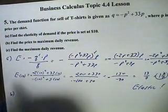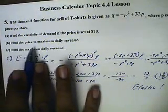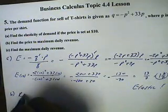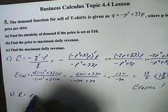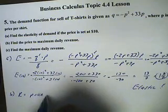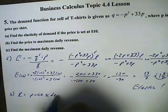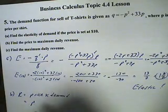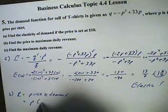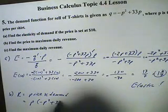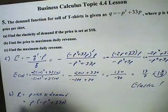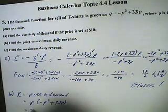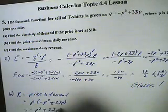Part B: find the price to maximize the daily revenue. Revenue is the price times demand. The price is P, and the demand is described by negative P squared plus 33P. So the revenue will be negative P cubed plus 33P squared.